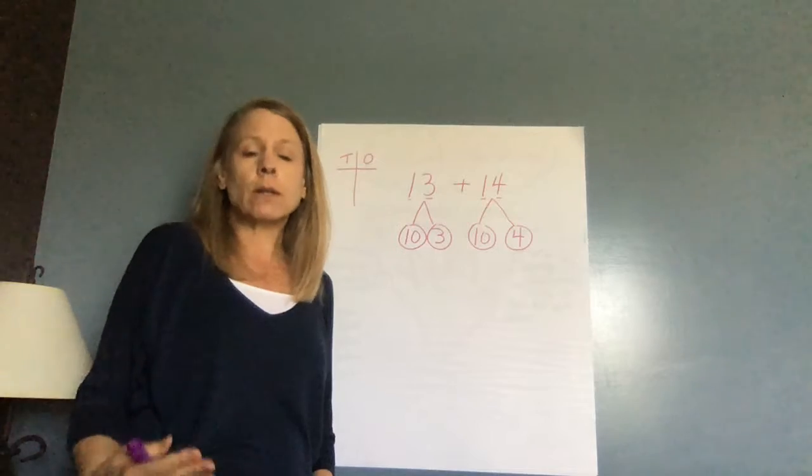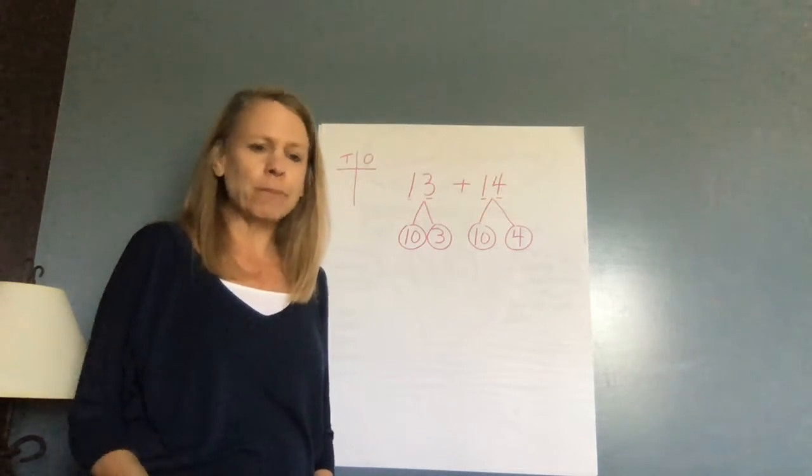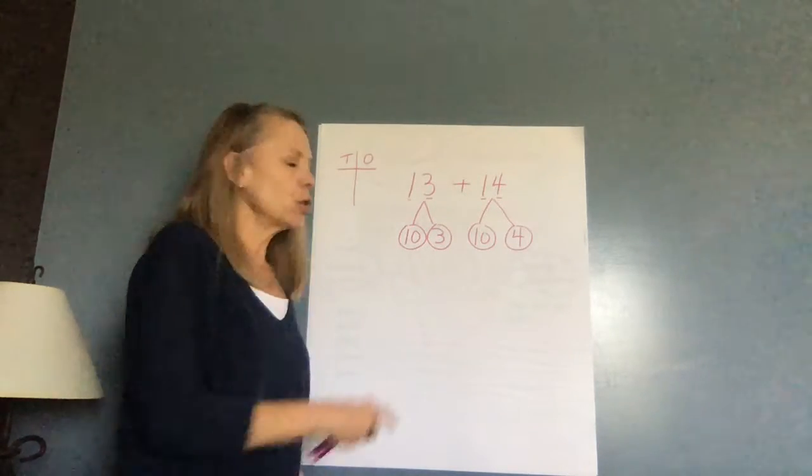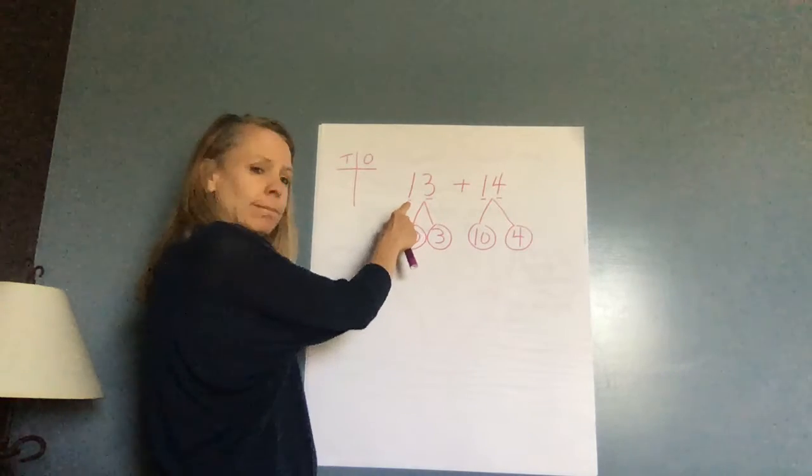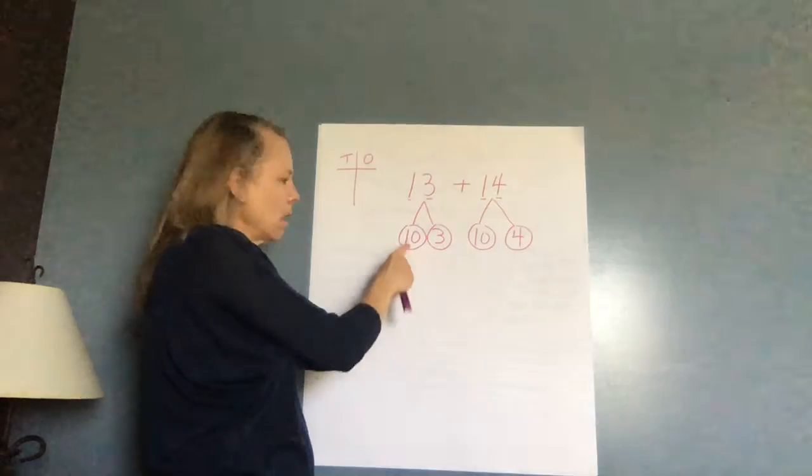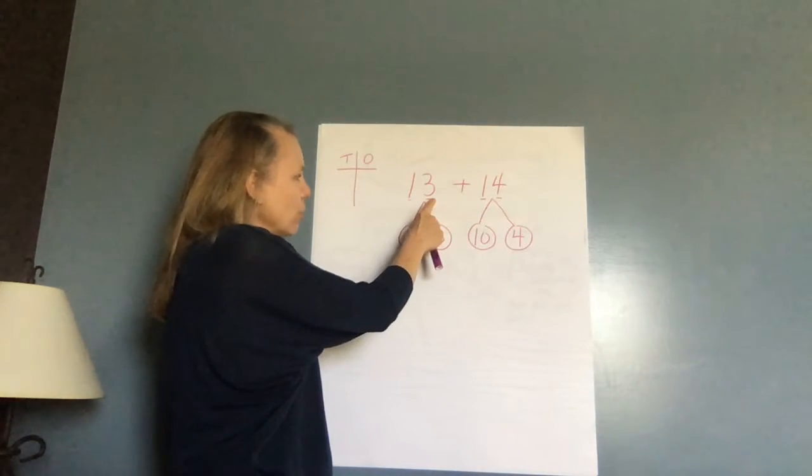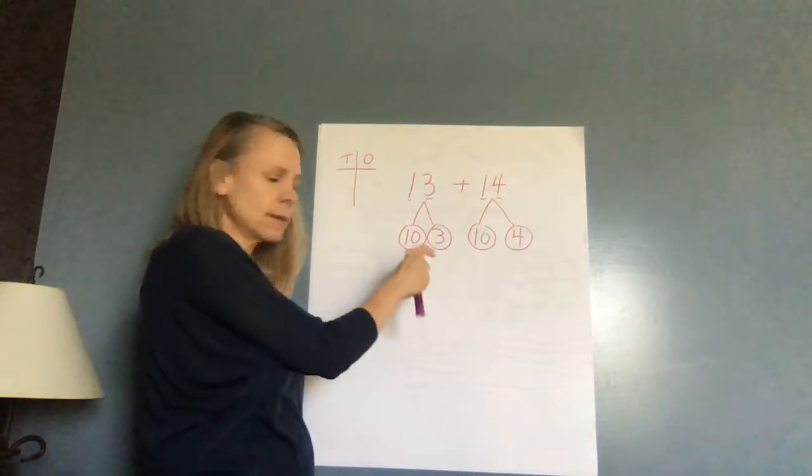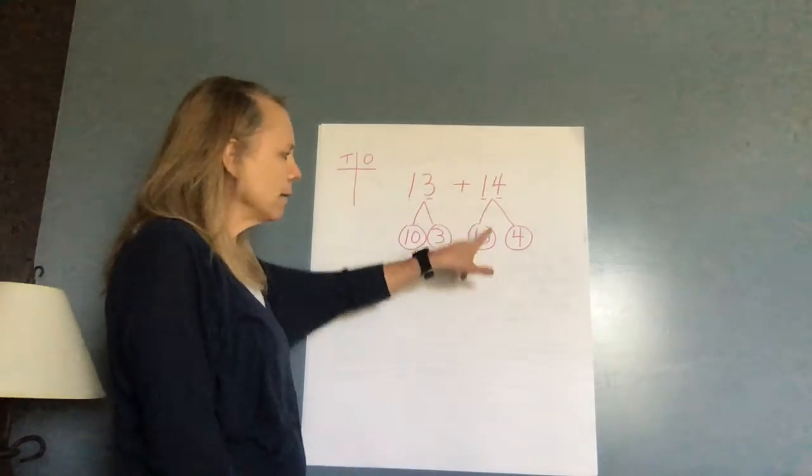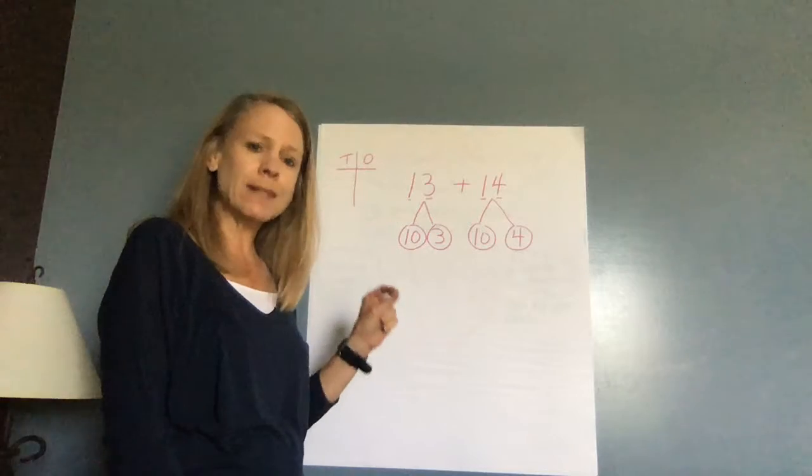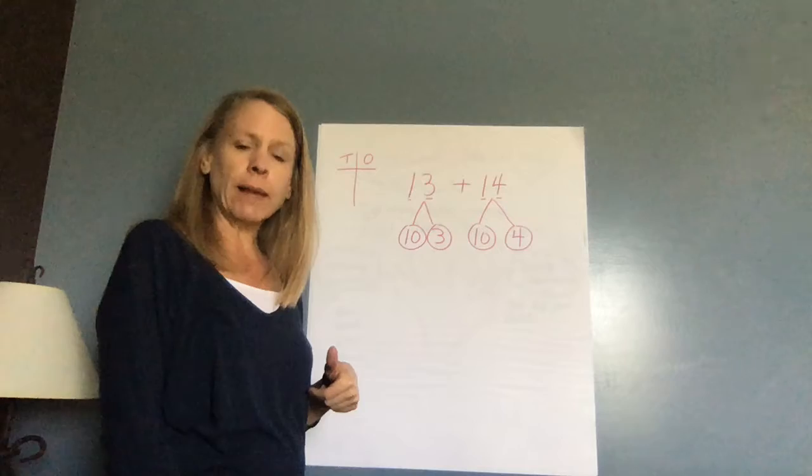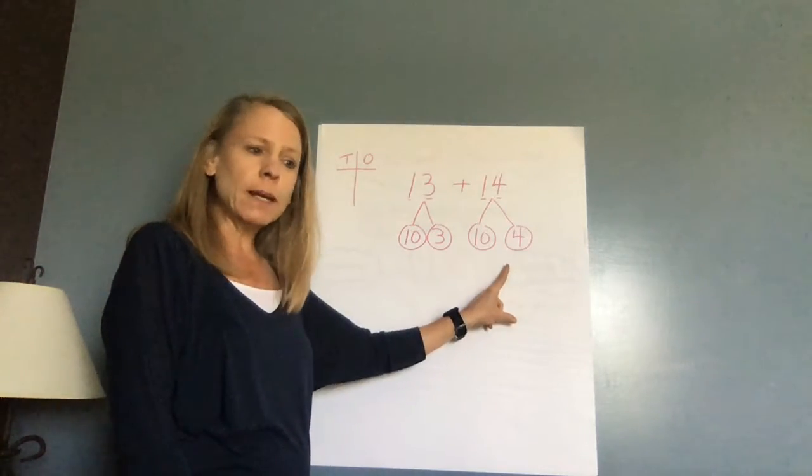So now I want to talk about adding these numbers together. When I look at the numbers, if I have the problem 13 plus 14, so first I'm going to say I have a one in the tens place. If I have one 10, I have 10. And then I have a three in the ones place. Three ones is equal to three. Then I'm going to do the same thing for 14. I have a one in the tens place. One group of 10 is equal to 10. And I have a four in the ones place, and four ones would be equal to four.